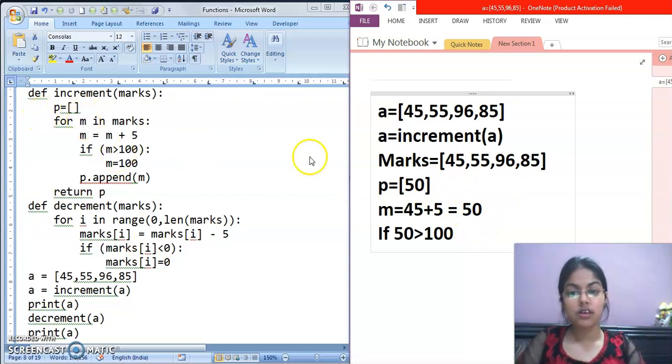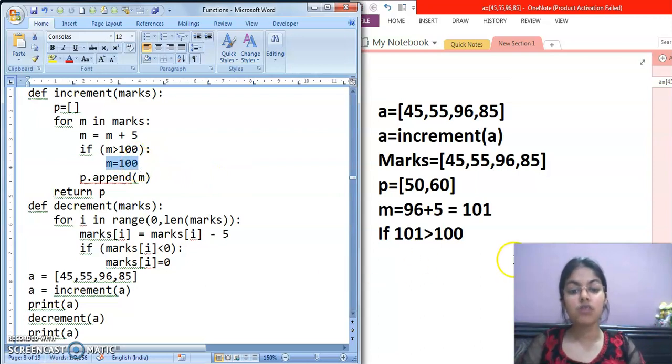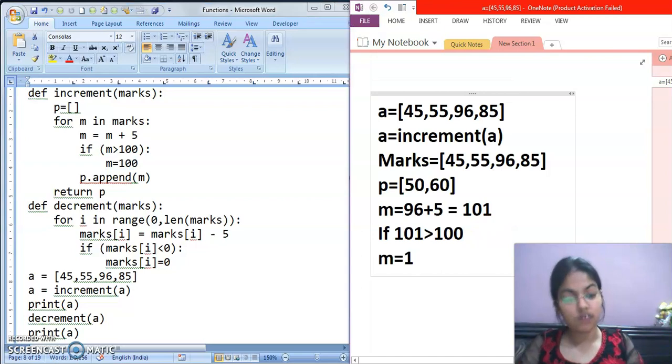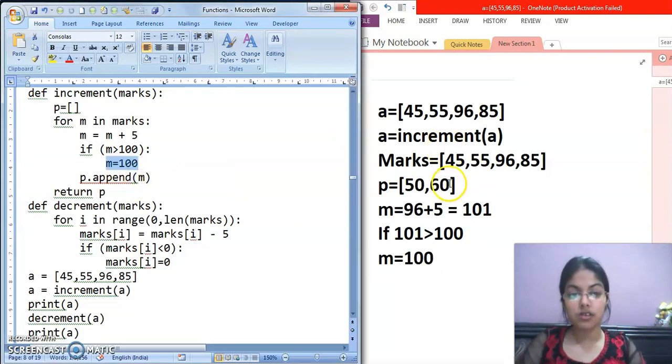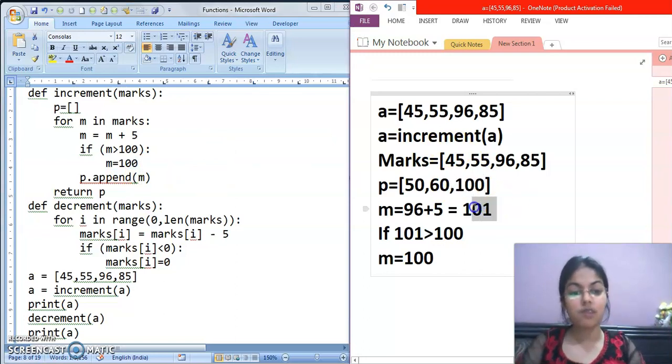So now this for loop will again start. M, now M mein value kya aegi? 55. 55 plus 5, 60. If 60 is greater than 100. Again condition is false. So this will be appended in the list. Now 96. M will be 96. 96 plus 5 is 101. Now 101 is greater than 100. Now this time this condition is true. Because 101 is greater than 100. So this statement will get executed that M equals to 100. Now M ki value kya karni hai? 100. And P dot append M. So P list mein now we append 100. Not 101. Because M is changed now from 101 to 100.